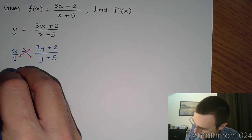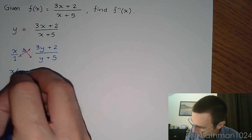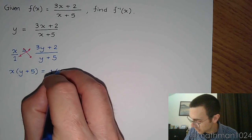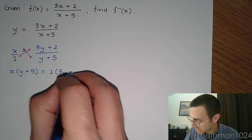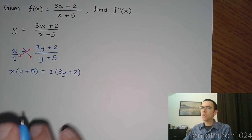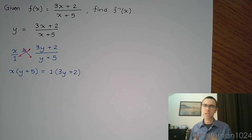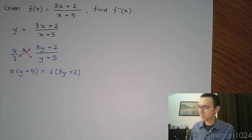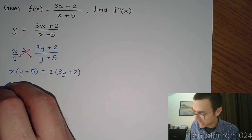So that means I can say x times (y + 5), and that's going to equal the other cross product of 1 times (3y + 2). Now right now we have y in two different spots, and that's going to be a problem, but we're going to fix that here in just a moment. Eventually we're going to get everything that has y to one side, and anything that doesn't have y is going to go to the other side of the equation.